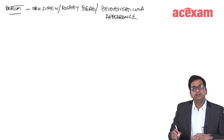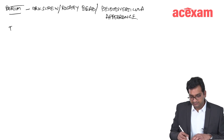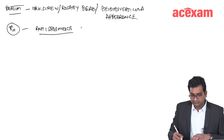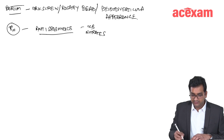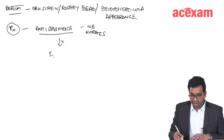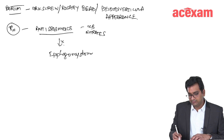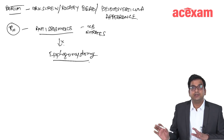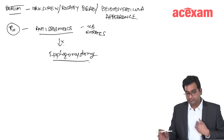The treatment for diffuse esophageal spasm is anti-spasmodics — calcium channel blockers or nitrates. If there is no response, we go for esophagomyotomy, not cardiomyotomy.